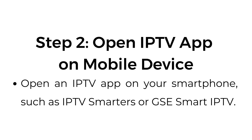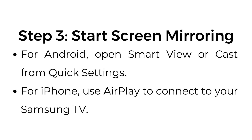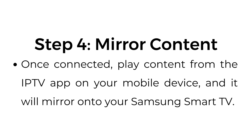Step number two, open an IPTV app on your mobile device, such as IPTV Smarters or GSE Smart IPTV. Step number three, start screen mirroring. For Android, open Smart View or Cast from quick settings. For iPhone, use AirPlay to connect to your Samsung TV. Step number four, mirror content. Once connected, play content from the IPTV app on your mobile device and it will mirror onto your Samsung Smart TV.